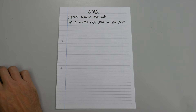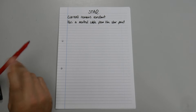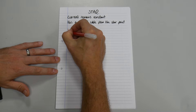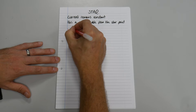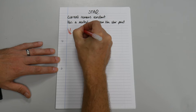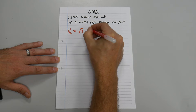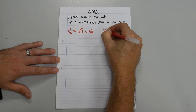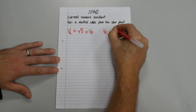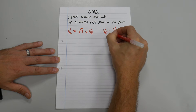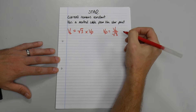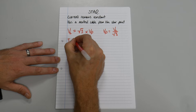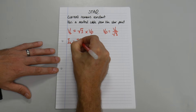Now I'm going to change the colour of my pen — let's do all of our formulas in red. So our first formula is VL equals square root of 3 times Vp. And transposing that formula: Vp equals VL over square root of 3. Then we have IL equals Ip.